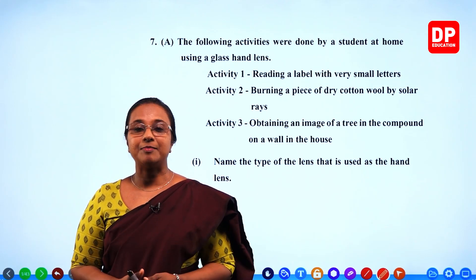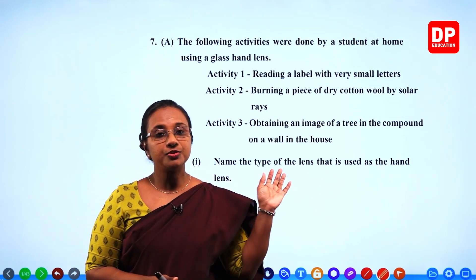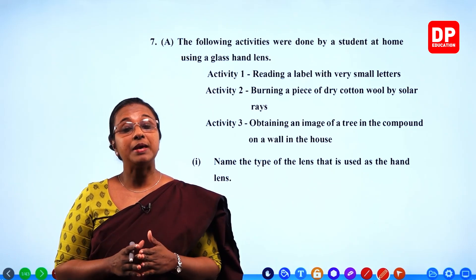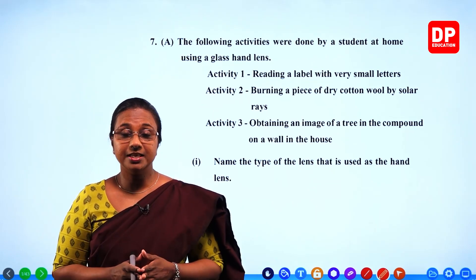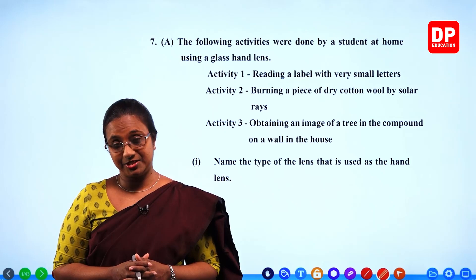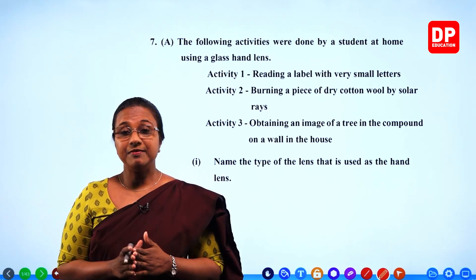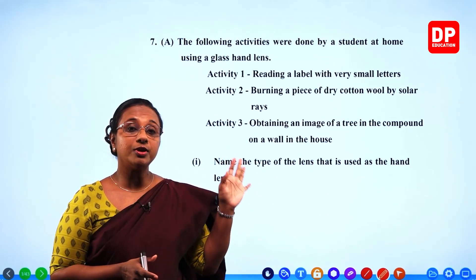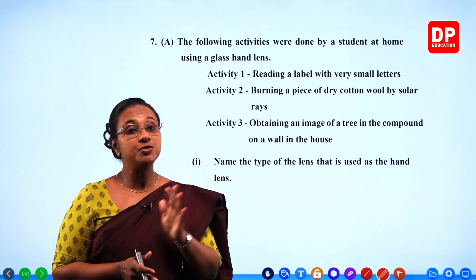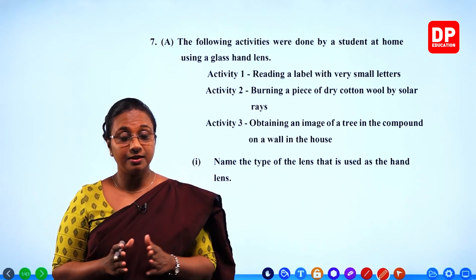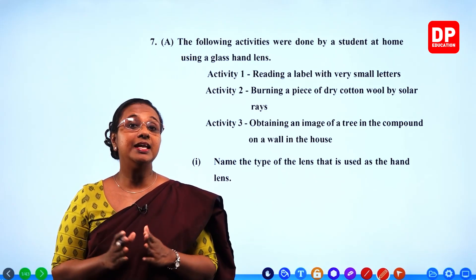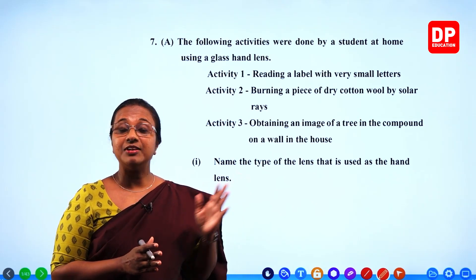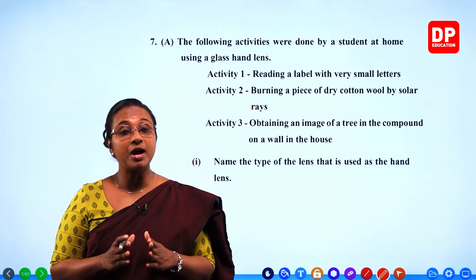Hello my dear students, welcome to today's lesson. Today I am going to continue with the questions of Part B in Paper 2 of your GCEO Level 2020 Science Examination. In the previous chapter, I discussed up to the sixth question. Now, out of question numbers 5 to 9, you need to select three questions and write the answers in the booklet provided.